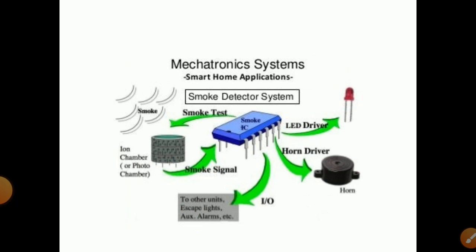Another mechatronic system is the smart home smoke detector. In a house, if any appliance like a cooker produces smoke, that smoke should be detected and an alarm should be activated. The smoke IC receives the smoke signal and gives a signal to an LED driver or horn driver so that the horn or alarm gets activated.